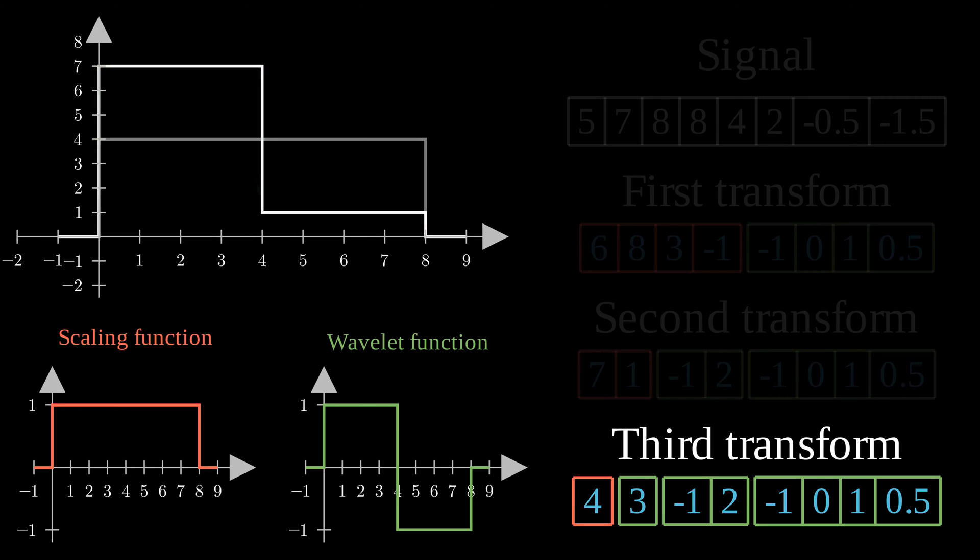We can now move to the second detail space. This one is composed of two values. Therefore, we will need to use two wavelet functions. The first one will be used for the first half of the signal, the second one for the second half. You can see that a negative coefficient flips the function in order to get the first new step going down.